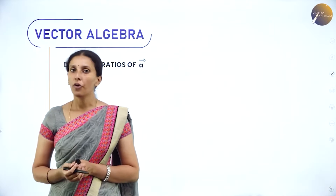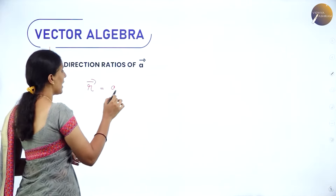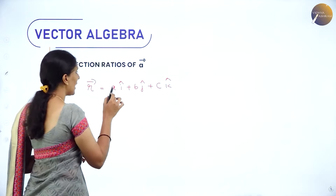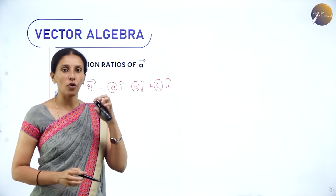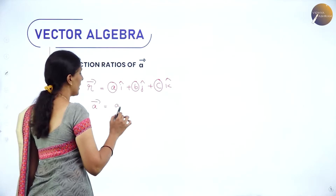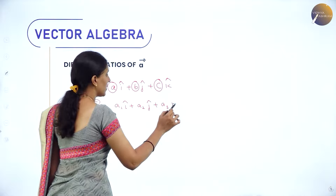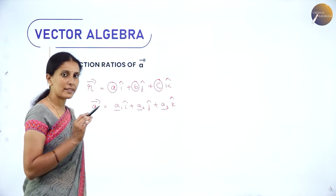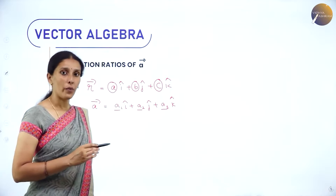Now, direction ratios of a vector: suppose vector R = aî + bĵ + ck̂. The scalars a, b, c are called the direction ratios of the vector. When we write vector A = A1î + A2ĵ + A3k̂, the scalars A1, A2, A3 represent the distances of the position vector from the x-axis, y-axis, and z-axis respectively, and these are called the direction ratios of vector A.